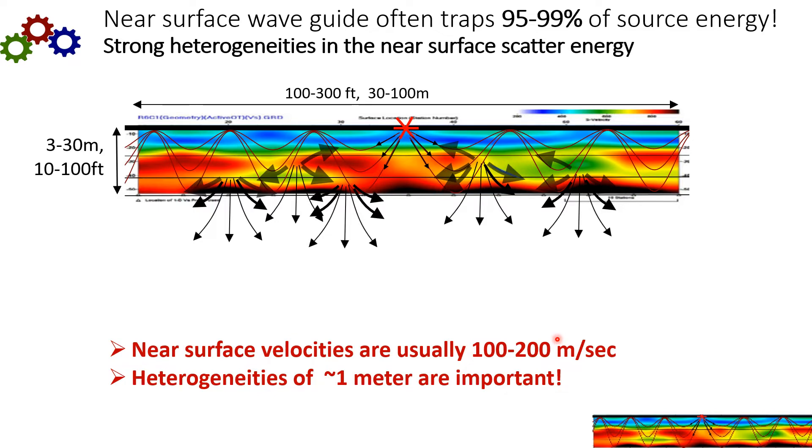The near surface velocities here are usually very slow, just 100 to 200 meters per second. And this slow velocity does two things. It creates a surface wave guide that traps 95 to 99 percent of the energy. And then it creates very short wavelengths so that small scale heterogeneities are important.